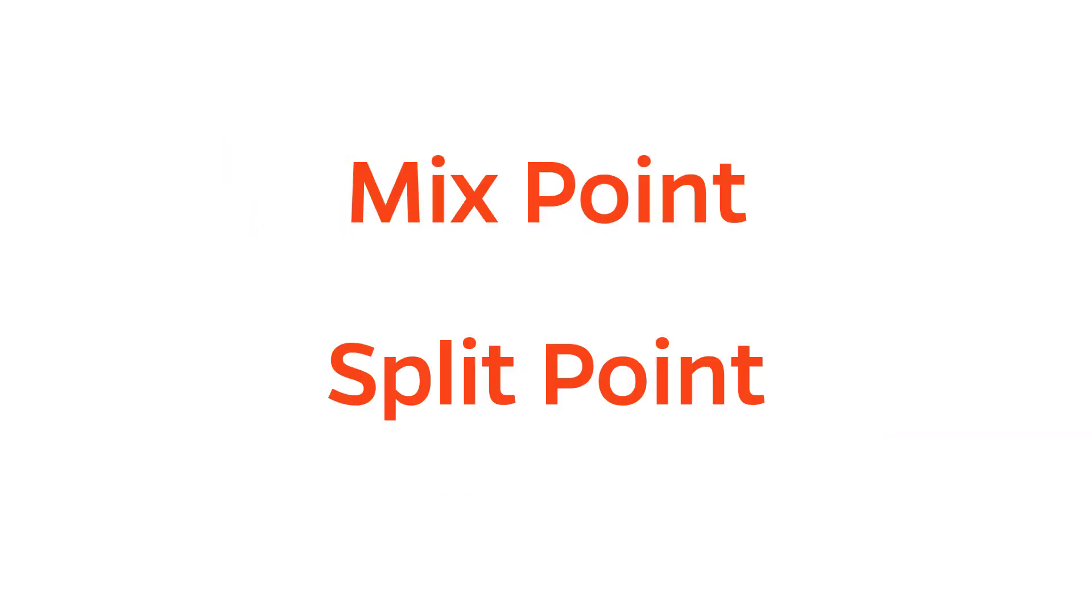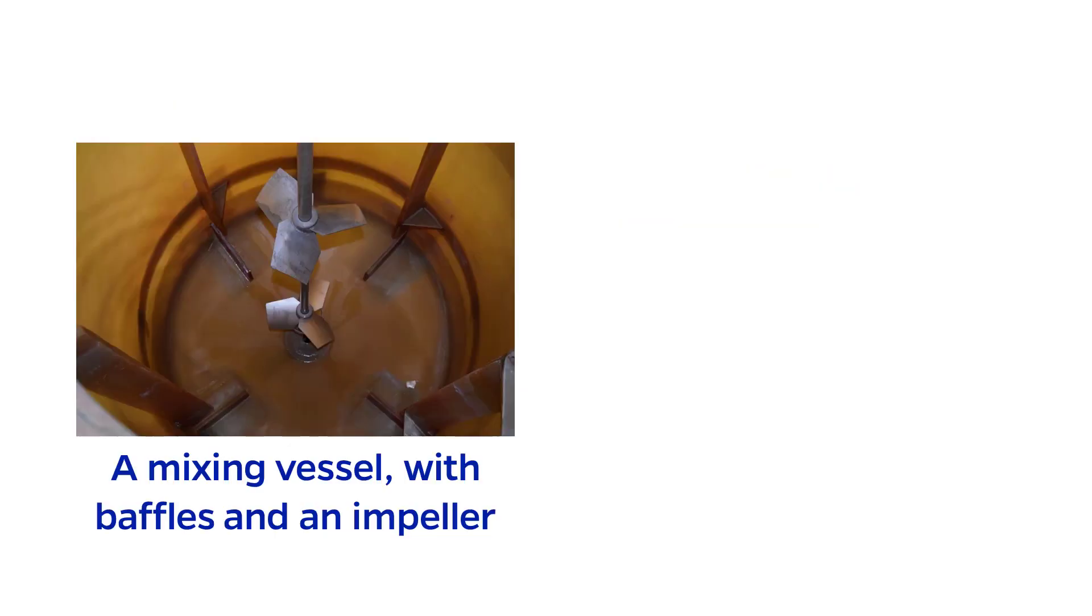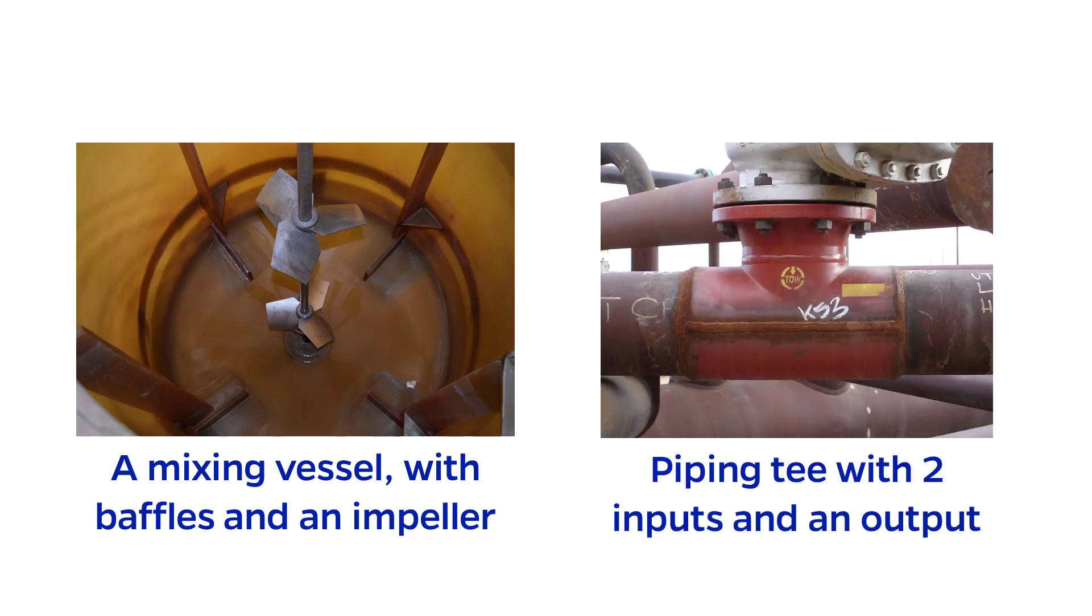A mix point is where two process streams merge together to form one stream. For example, the confluence of two rivers is nature's mix point. In a chemical process, a mix point may be a dedicated vessel with baffles and stirring, or it could be as simple as a T intersection with two inputs and one output in a piping network.